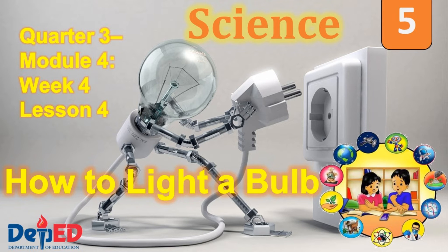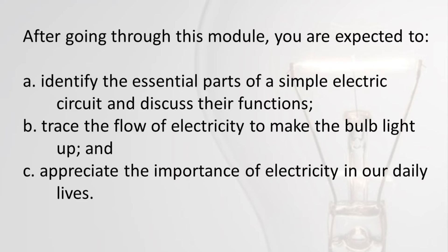Science 5, Quarter 3, Module 4, Week 4, Lesson 4: How to Light a Bulb. After going through this module you are expected to: (a) identify the essential parts of a simple electric circuit and discuss their functions; (b) trace the flow of electricity to make the bulb light up; and (c) appreciate the importance of electricity in our daily lives.